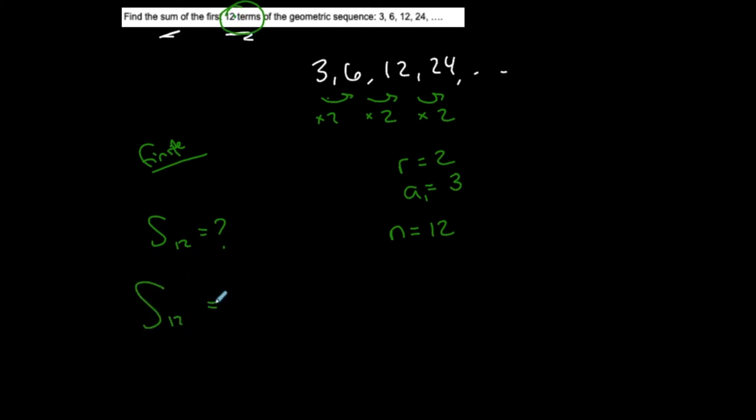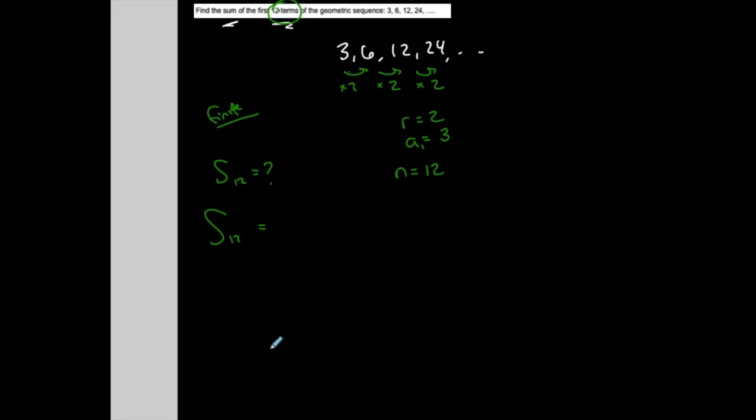So s12 for a finite geometric series, this particular finite geometric series, I want a1, which is 3, times 1 minus r, r is 2, to the n, which is 12, all over 1 minus r.